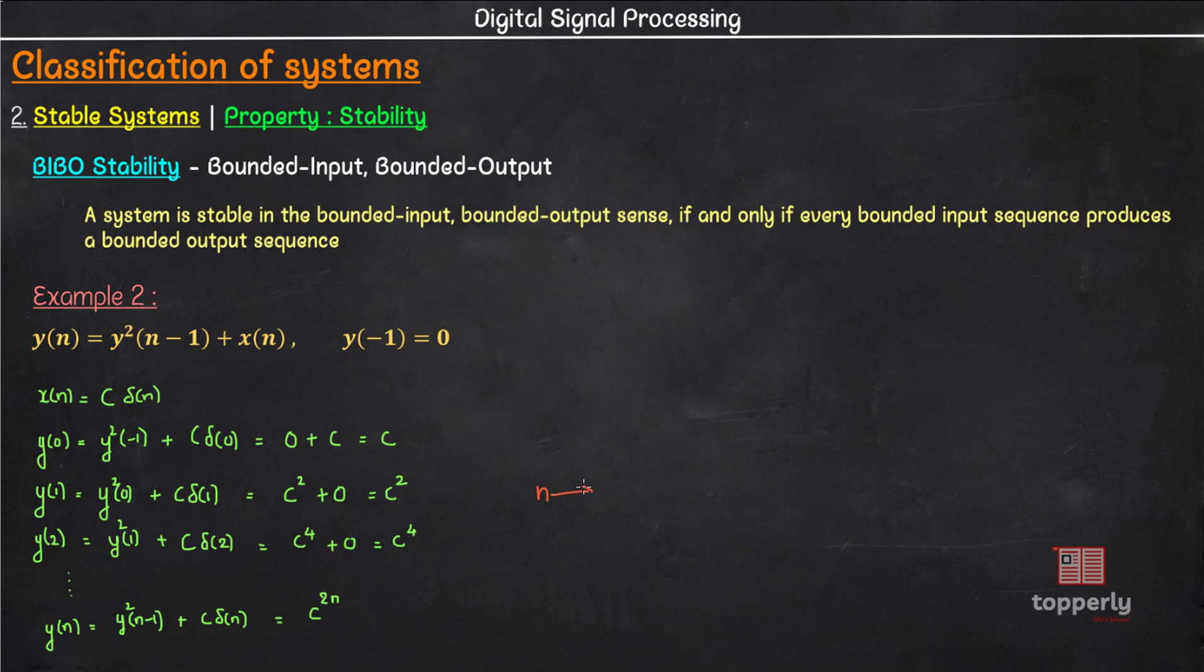So as n tends to infinity, y(n) tends to infinity which is unbounded. Therefore our condition that a bounded input should produce a bounded output is violated. So this system is not BIBO stable.